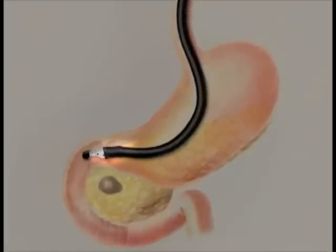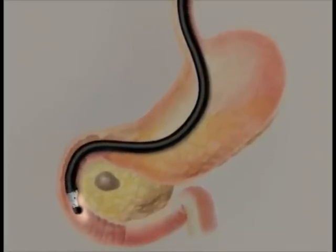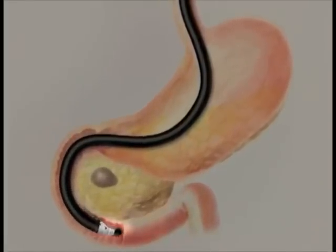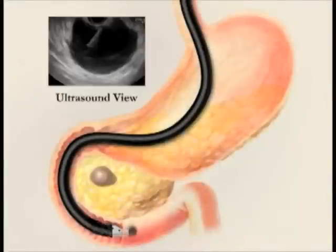From the stomach, the endoscope enters the duodenum, or first part of the small bowel. At this point, the doctor switches the endoscope view from the camera to the ultrasound.